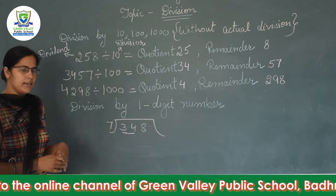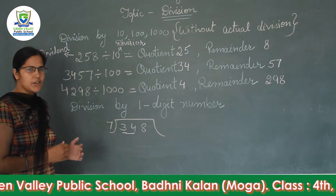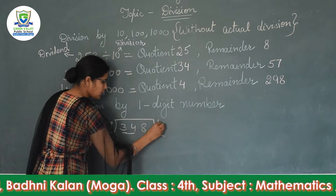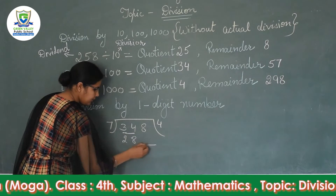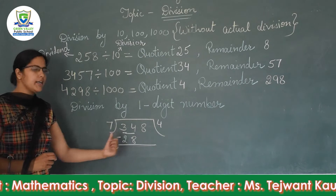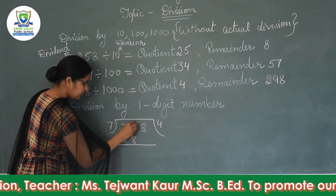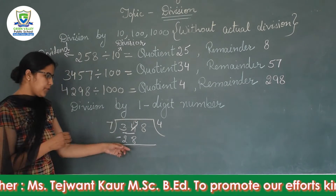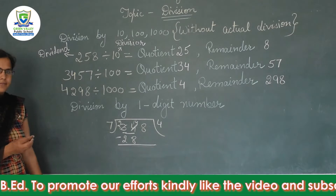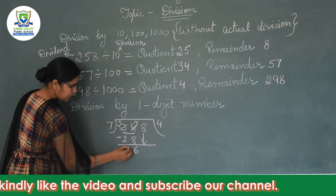7 sevens are 49 — too large. 7 sixes are 42 — still greater. 7 fives are 35 — also greater than 34. 7 fours are 28, which is less than 34, and 7 fives are 35 which exceeds 34, so we write 28. Now subtract: we can't subtract 8 from 4, so we borrow. 14 minus 8 is 6, and 2 minus 2 is 0.